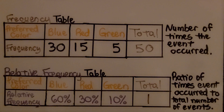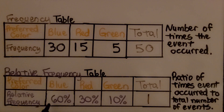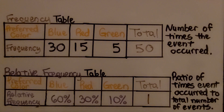A relative frequency table is a ratio or a percent decimal of the times the event occurred to the total number of events.